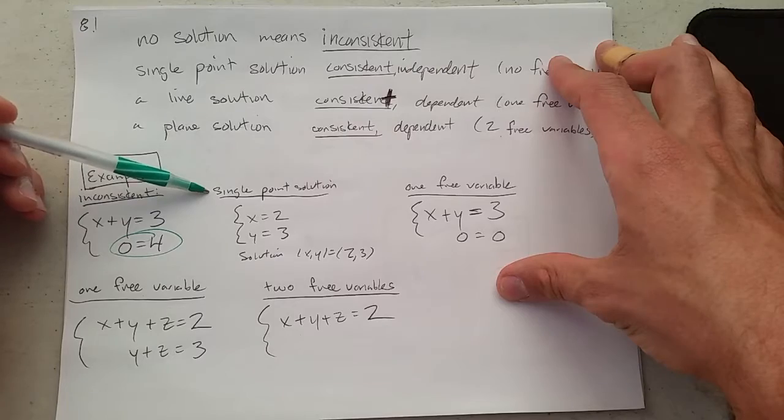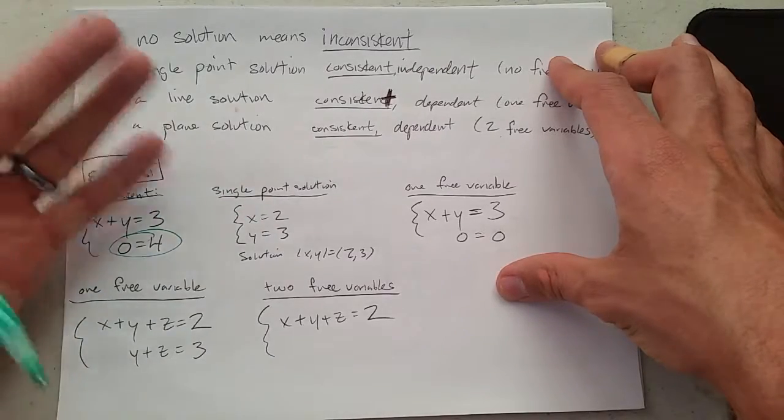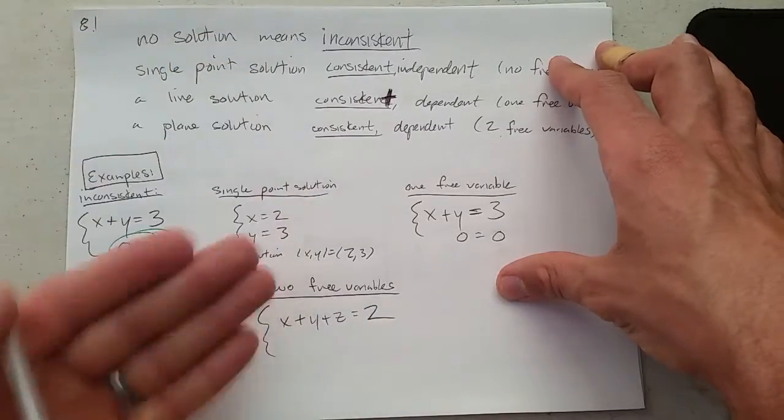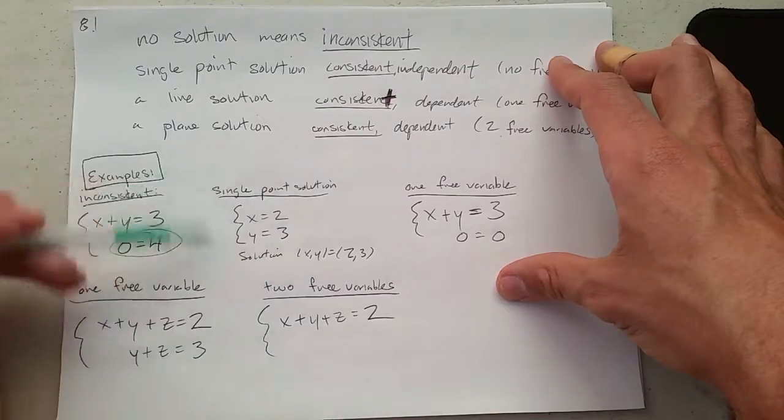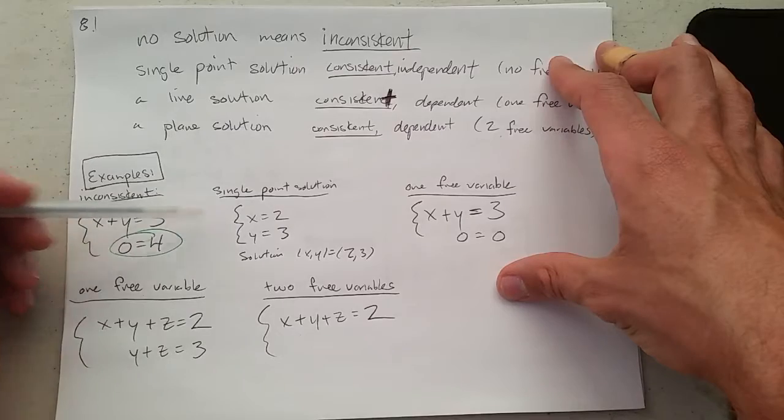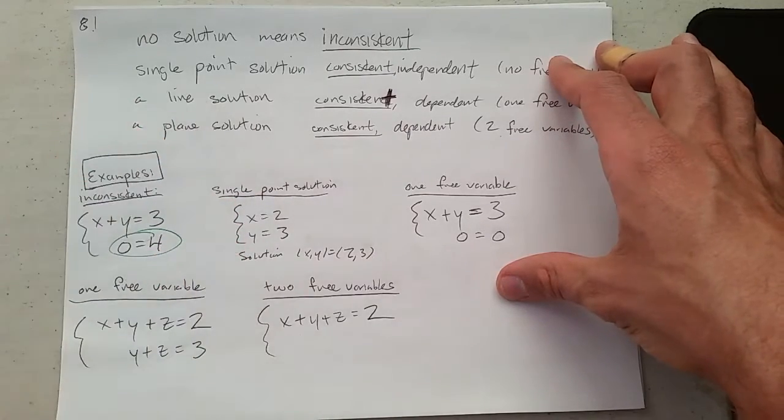What does single point solution look like? You get a value for X, a value for Y. If we're in three dimensions, you would have a value for Z. If we're in four dimensions, you would have a value for each of your four variables. That would be a single point solution. And this is what I call the happy ever after ending, where you have no free variables to worry about and you just get number, number, number, and that's your solution.